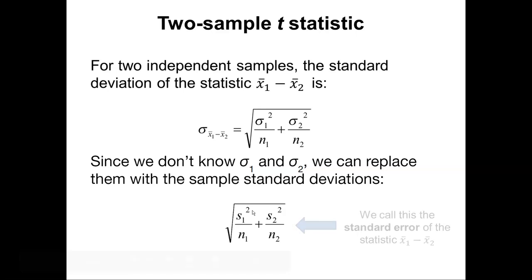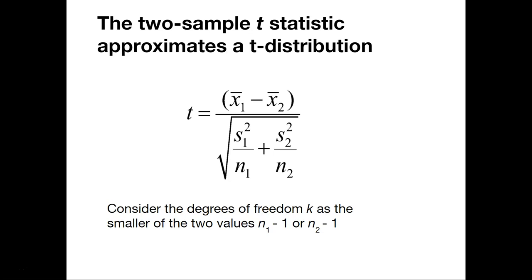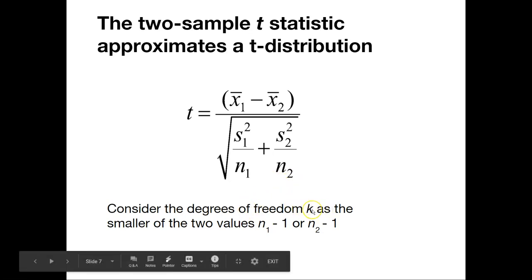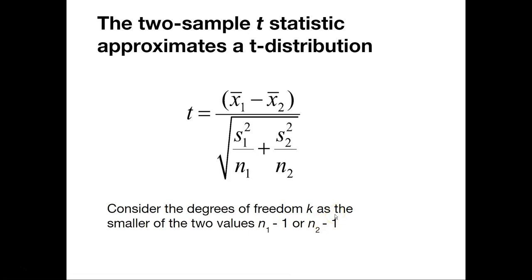So we can call this the standard error of the statistics x bar 1 minus x bar 2. And then we can come up with our two sample t statistic, and this approximates a t distribution. So we're going to be going back to the t table in our hypothesis testing to see whether or not differences might exist between two populations. We have one degree of freedom we'll call k, but it's dependent on the two values n sub 1 minus 1 and n sub 2 minus 1. And so we can think about standardizing the difference to obtain this t statistic.